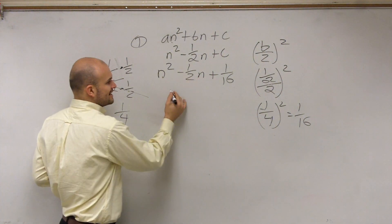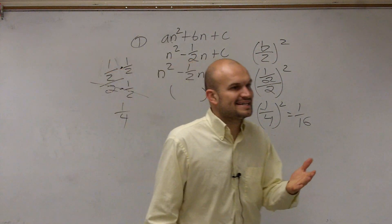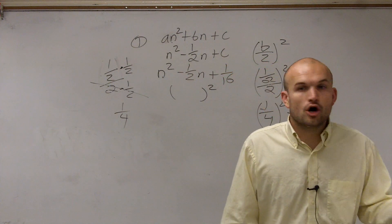So I need to write this as a binomial squared. Essentially, all I'm doing is factoring this. That's all you're working on.